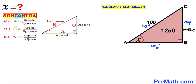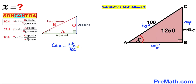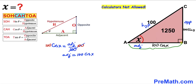Now let's focus on cosine of x, which equals adjacent divided by hypotenuse. So cosine of x equals the adjacent side divided by 100. Multiplying both sides by 100, the adjacent side turns out to be 100 times cosine of x. So side AB equals 100 times cosine of x.